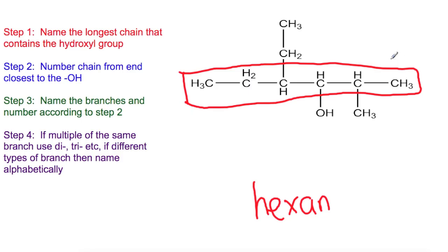Step number 2, we need to number our chain. So we've got 1, 2, 3, 4, 5, 6. Numbering from the right because that gives the OH the smallest number. So that means that we have hexan 3-ol.